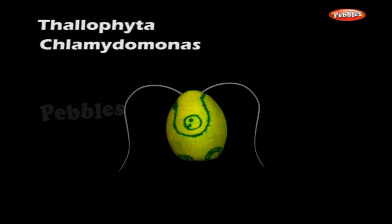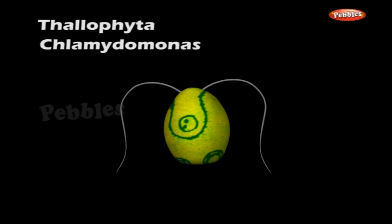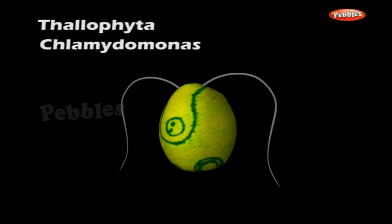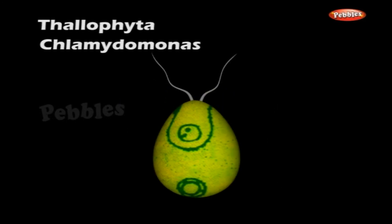Structure: Chlamydomonas is a motile, biflagellate, unicellular green algae. It is more or less spherical or ovoid in shape; rarely it is ellipsoidal.